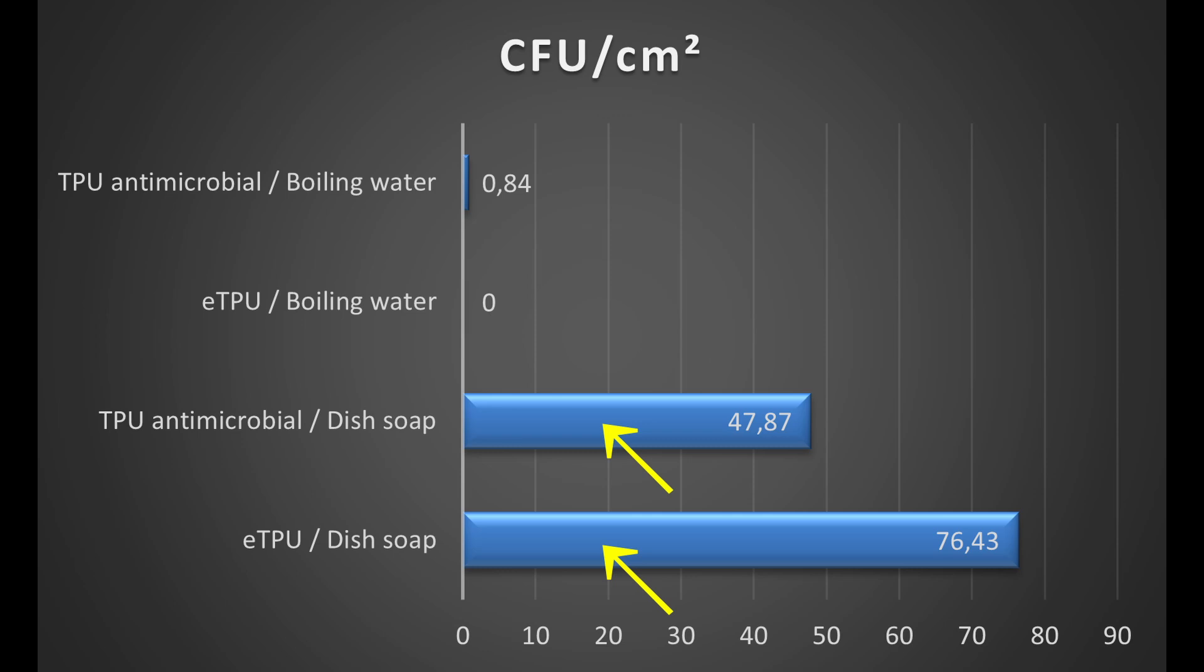More important are the last two data. These test objects were cleaned with dish soap. Here we can see the effect of the TPU antimicrobial filament. In this case the CFU units were reduced to let's say 60% approximately. Of course not 99% like in the specifications, but these are different bacteria. These are from the environment after that contamination of the cups with the milk.